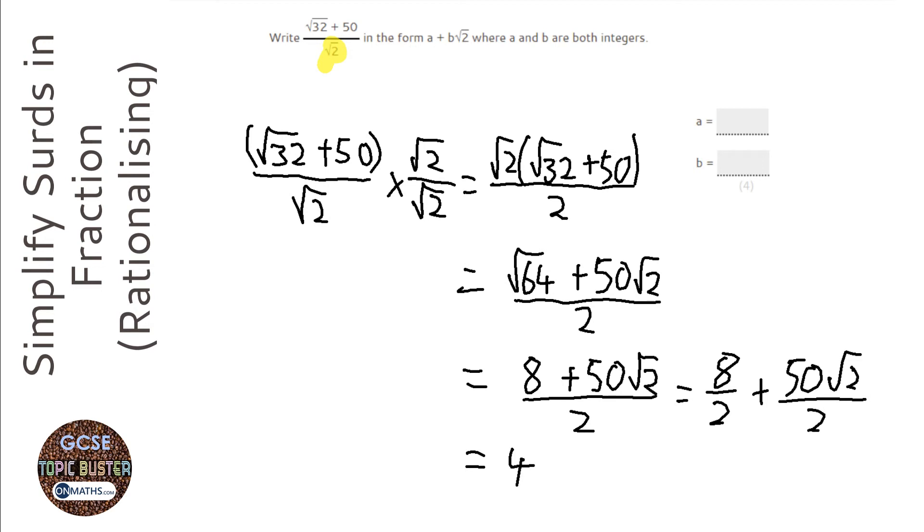8 divided by 2 is 4, and 50 root 2's, but then half it is going to be 25 root 2's.